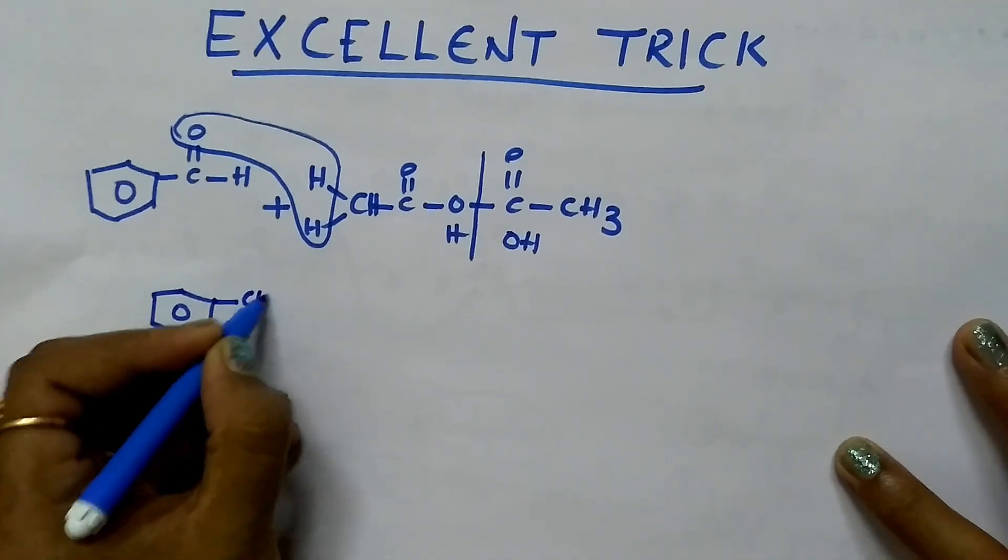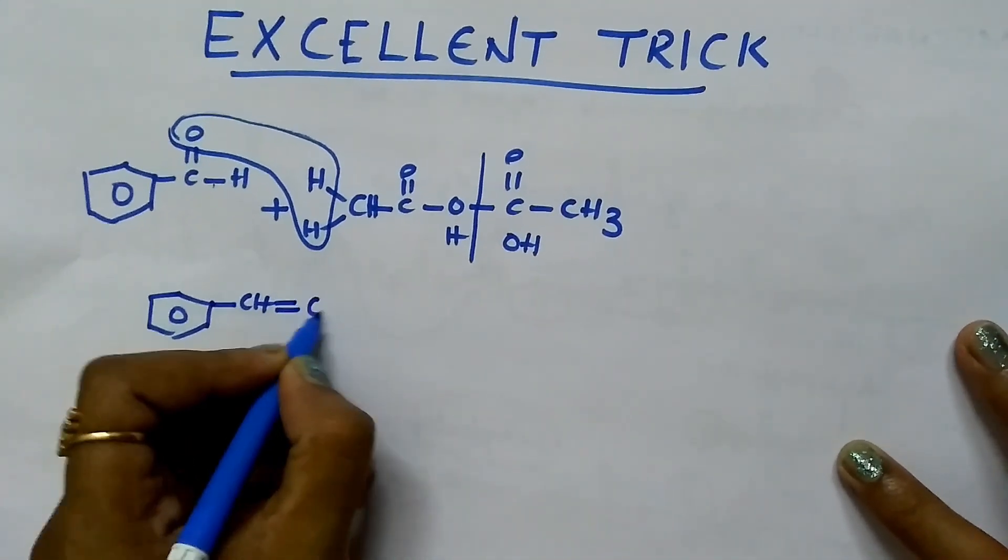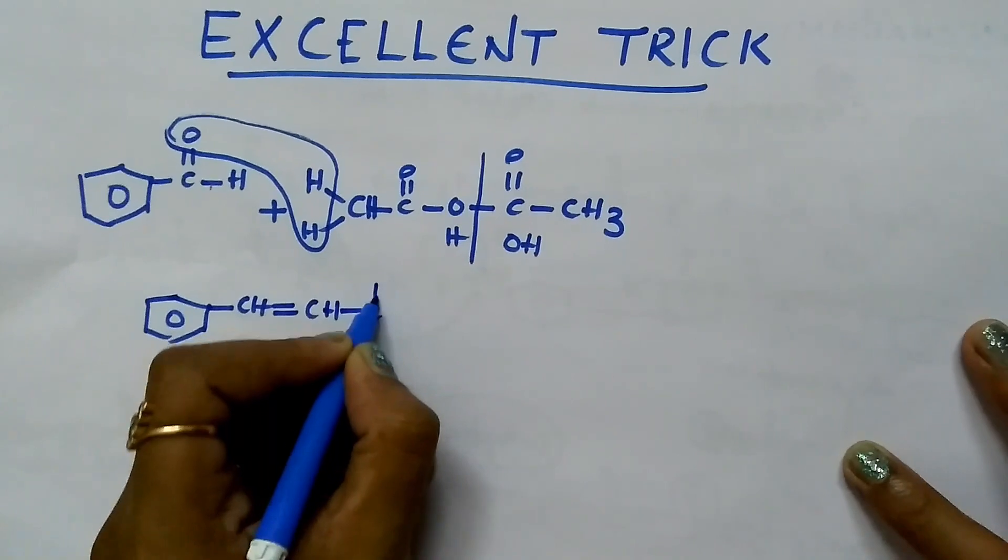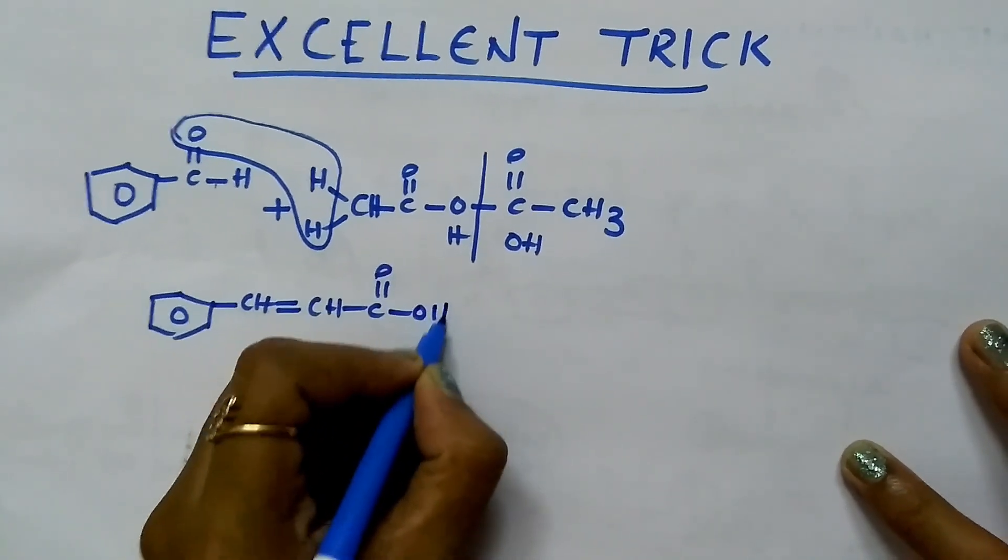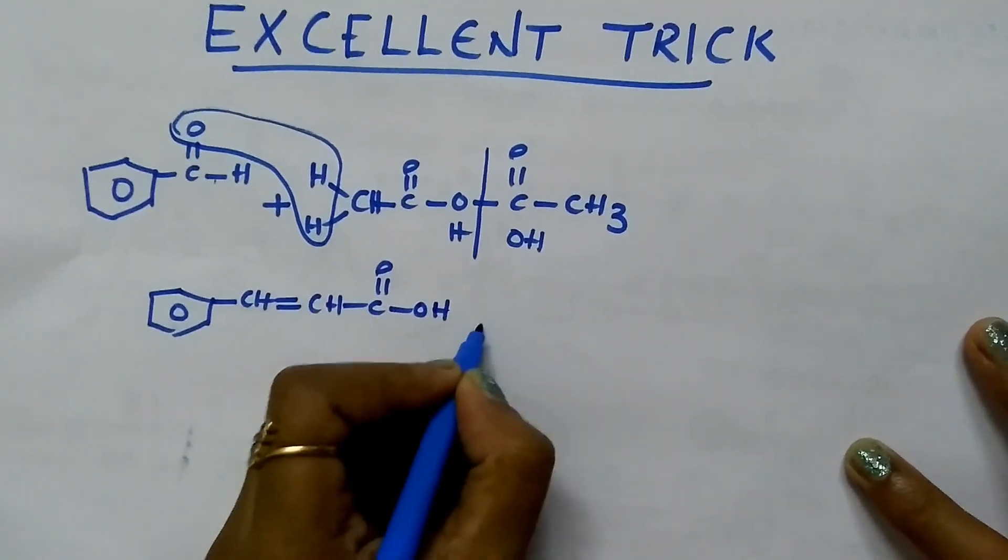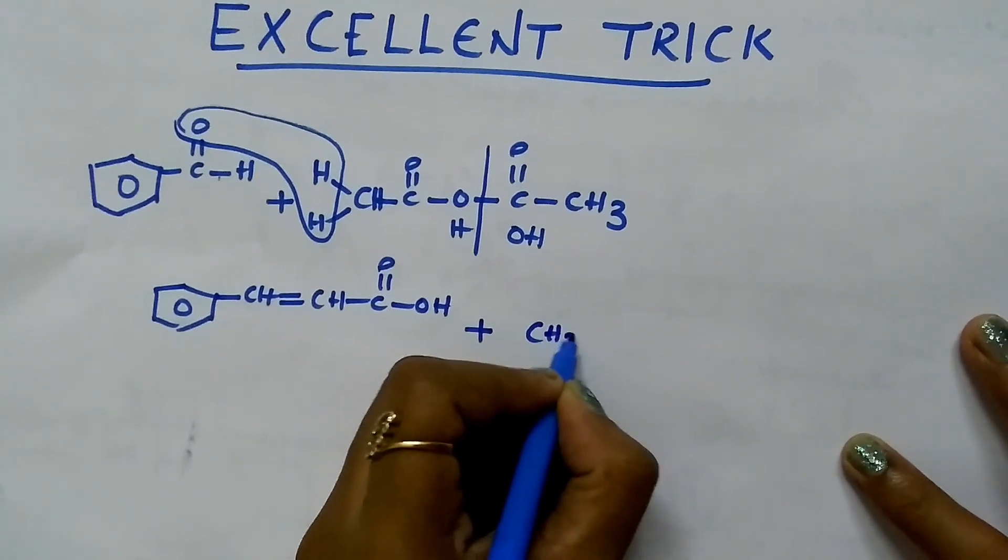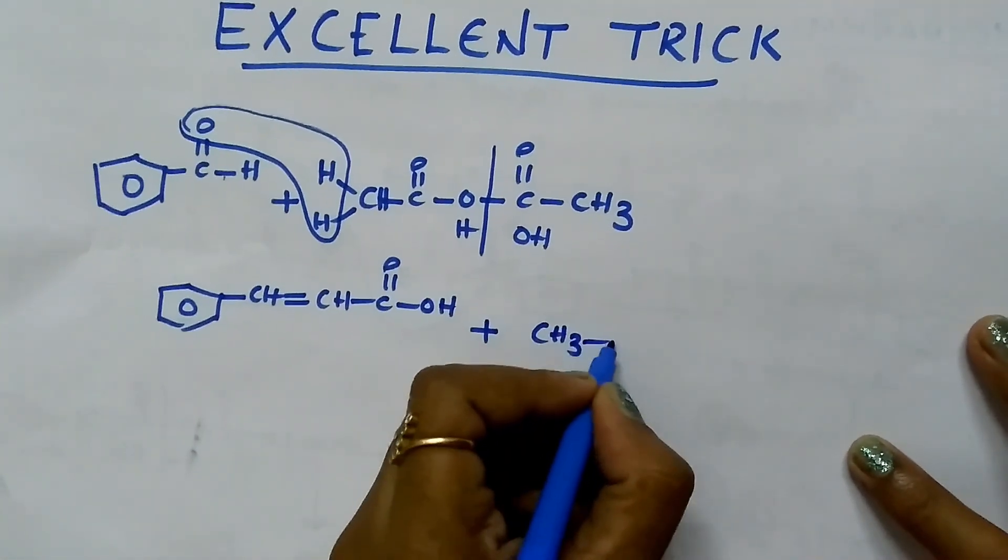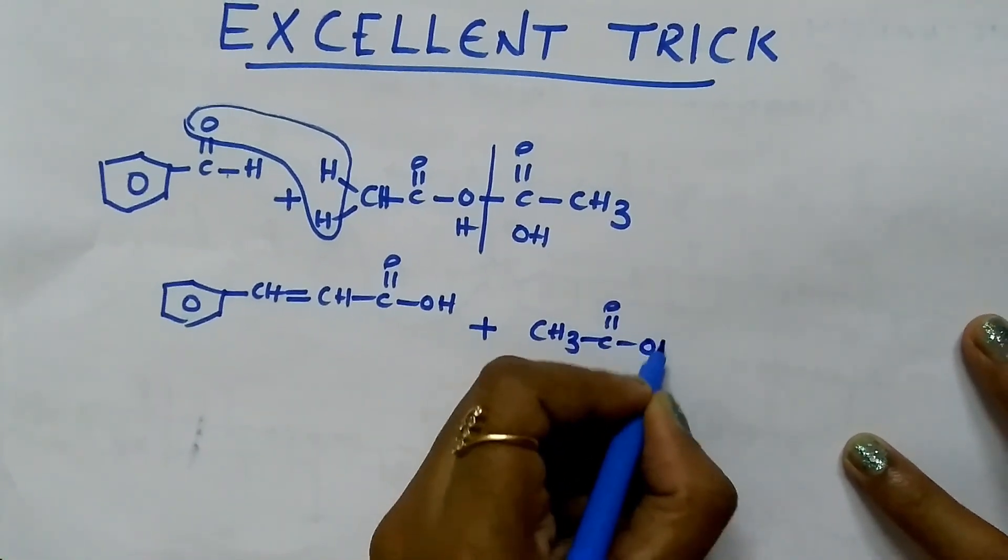C, H and here double bond C, H, C double bond O, O, H. This is cinnamic acid plus CH3, this one, C double bond O, O, H.